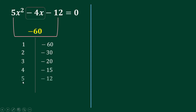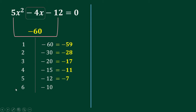Continuing the factor pairs: 4 times negative 12 and 6 times negative 10. Then you add each pair: 1 plus negative 60 is negative 59, negative 28, negative 17, negative 11, negative 7, and negative 4. Since the middle term is negative 4, therefore our factor pair is 6 and negative 10.